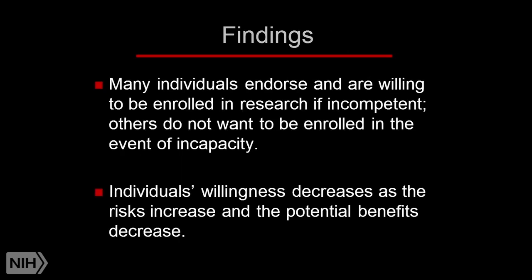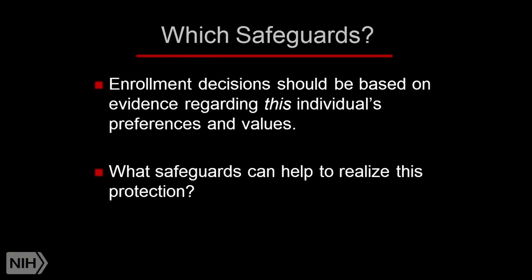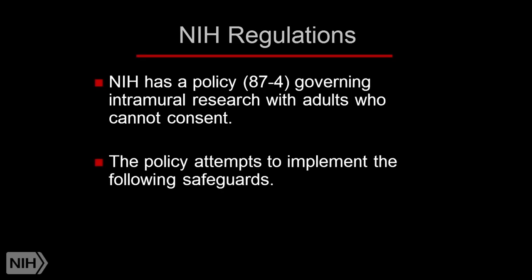What this suggests is that there's a tracking between the type of research and people's willingness. People don't have categorical views — some are willing to be in no research, very few are willing to do almost anything, but most people are tracking the risk-benefit and value of particular studies. The willingness to be in research if you lose capacity goes down as risks go up and goes down as potential benefits go down — as you'd expect. So the question becomes: if that's the general willingness across the U.S. population, what does that mean about how we can implement safeguards to allow this research but conduct it in an ethically appropriate way?